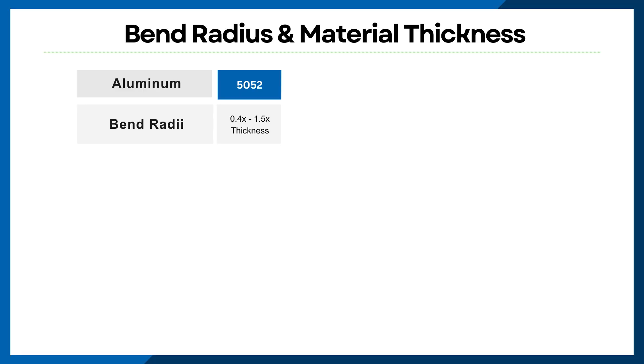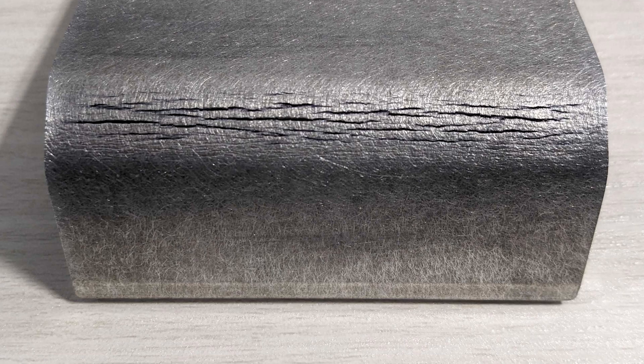Do note that this is all based on using our preferred tooling. When it comes to 5052 aluminum H32, you'll want your bend radii to be between 0.4 and 1.5 times the thickness of the material. It's also important to know that as it's a softer aluminum, 5052 H32 can handle small radii, but with thicker material it might crack if the radius is too small.